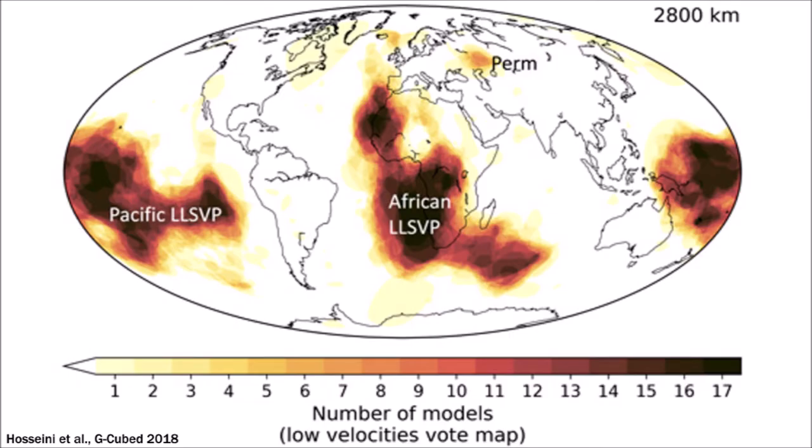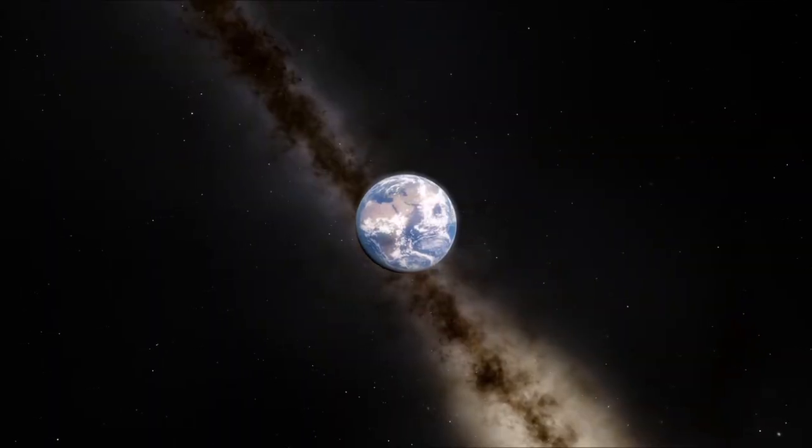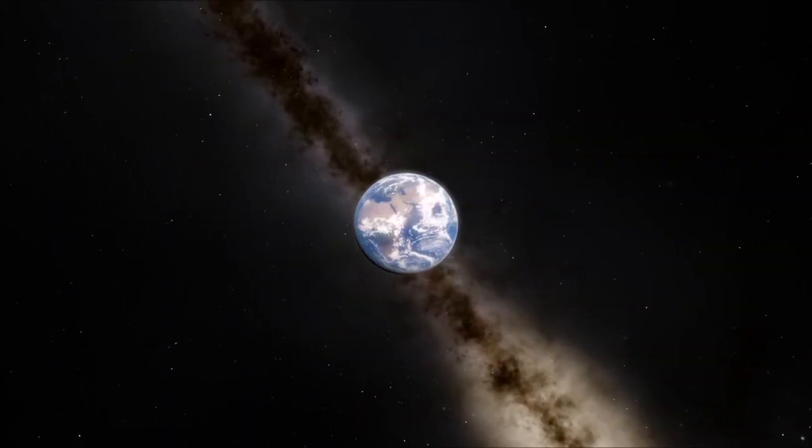These two formations have been called the Large Low Shear Velocity Provinces, or LLSVPs for short. Together they make up around 6% of the volume of the Earth.